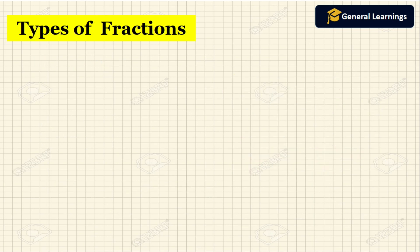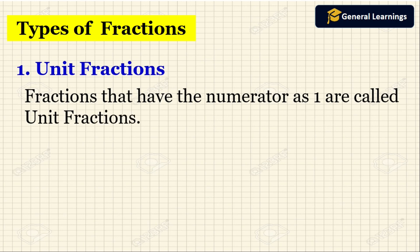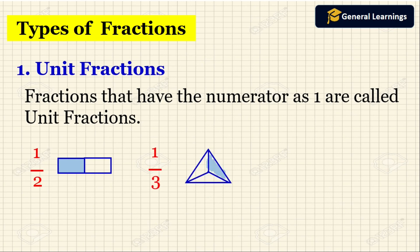Now we are going to see the types of fractions. The first one is unit fraction. Fractions that have the numerator as 1 are called unit fractions. For example: 1 by 2, 1 by 3, 1 by 4 — here the numerator is 1 in each case. So these will be called unit fractions. Unit fraction means if the numerator is 1, that fraction is called a unit fraction.